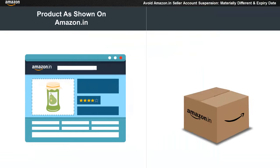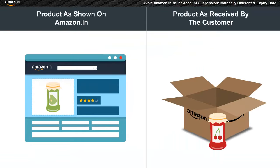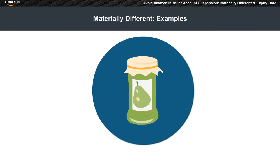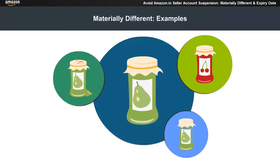An item is considered materially different when the actual item differs from what is shown on Amazon. Some examples being: different color, used product, damaged, etc.